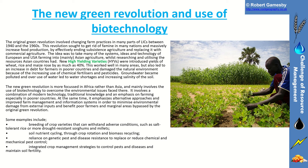As we've seen from maps of sub-Saharan Africa, those are the areas with the greatest food insecurity and undernourishment. The new green revolution involves a combination of modern technology, traditional knowledge, and an emphasis on farming especially in poorer countries. It also emphasises alternative approaches and improved farm management to minimise environmental damage. Examples include breeding crop varieties that can withstand adverse conditions like salt-tolerant rice and drought-resistant sorghums and millets, soil nutrient cycling through crop rotation and biomass recycling, and reliance on genetic pest and disease resistance to replace chemical or mechanical pest control.